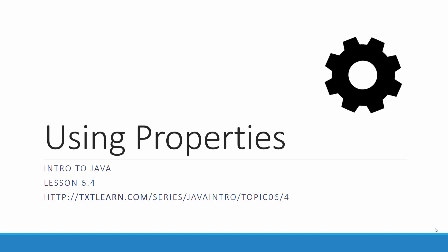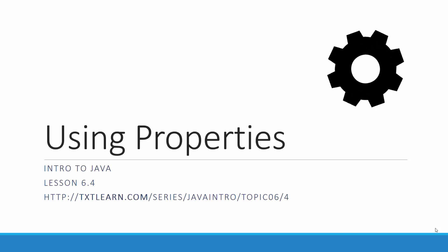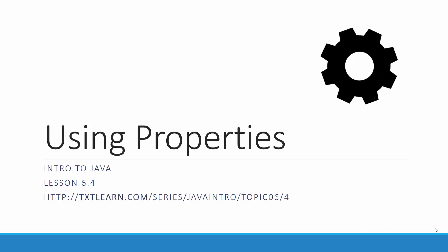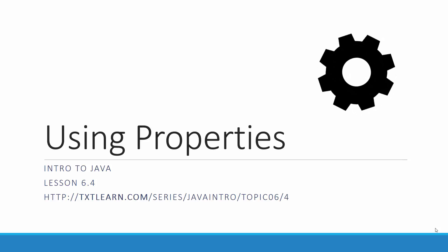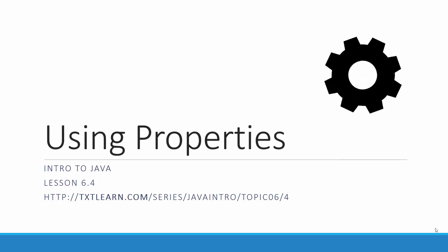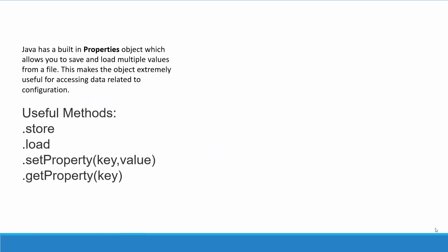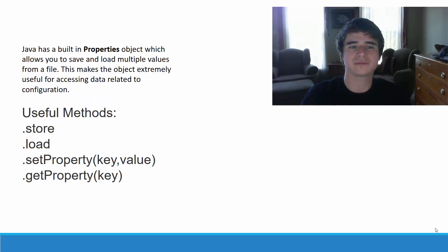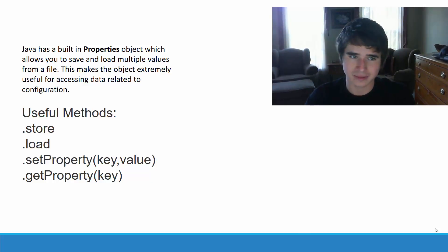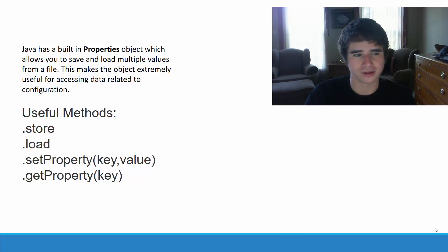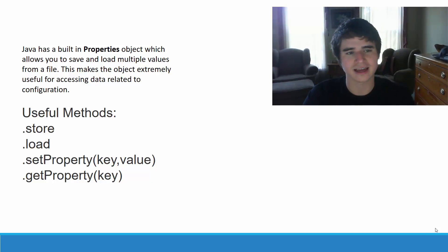Hello ladies and gentlemen, this is Kevin Olson from TextLearn.com and welcome to lesson 6.4 of the Intro to Java series. In this lesson we will be focusing on using the Properties class in the Java API in order to save and load configuration information for our programs. Java has this built-in Properties class which allows us to save and load multiple values from a file, making it extremely useful for accessing data related to configuration, like program settings.